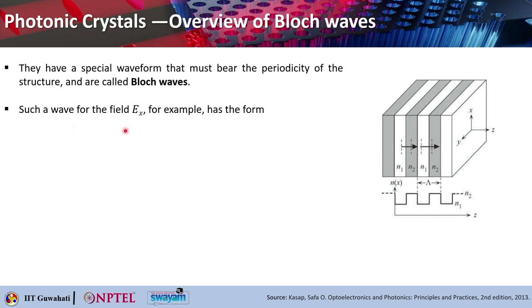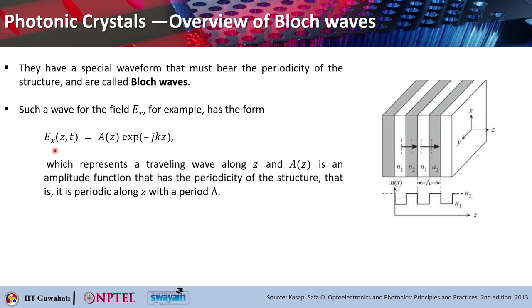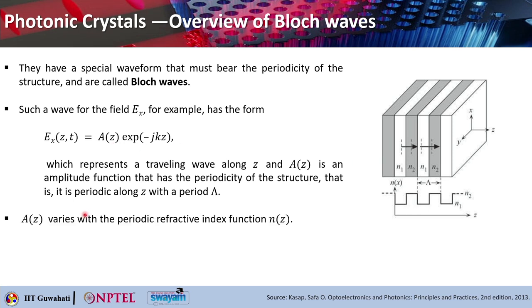Such a wave for electric field Ex has the form Ex(z,t), where the field is propagating along z and is a function of t. It has a(z), which is basically an amplitude function that contains the information of the periodicity of the structure — a(z) will also be periodic with period Lambda. a(z) varies with the periodic refractive index n(z), which is obtained from the dielectric constant. The refractive index is nothing but the square root of the dielectric constant or epsilon. You can also write that a(z + Lambda) = a(z).